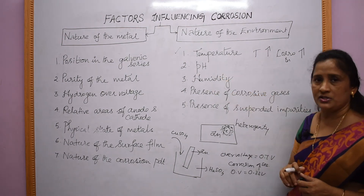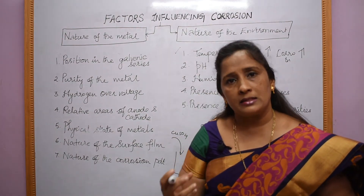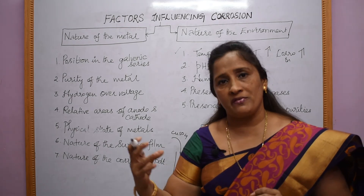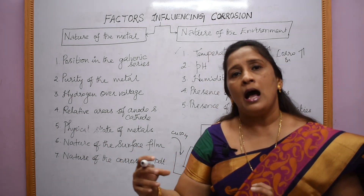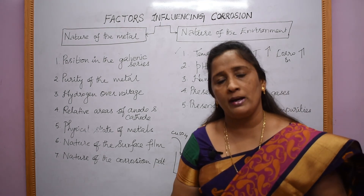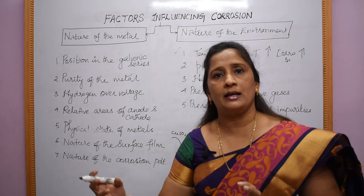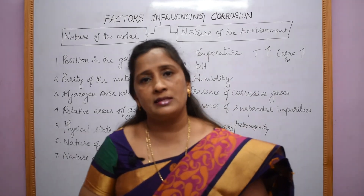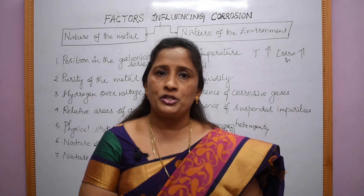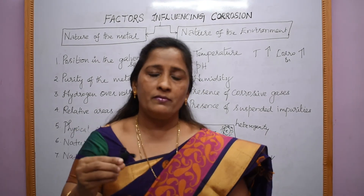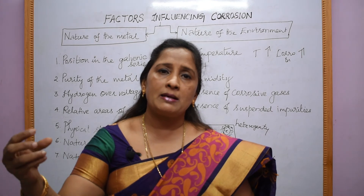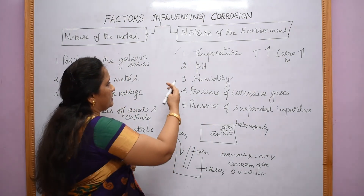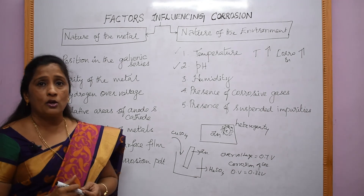The second environmental factor is pH. When the metal is in an acidic environment — when the pH is less than 5 — the rate of corrosion will be more. When the metal is in an alkaline environment, when the pH is around 10 or 11, the rate of corrosion will be less. For example, zinc metal placed in acidic solution shows a higher rate of corrosion, whereas zinc metal placed in an alkaline environment shows a lower rate of corrosion.